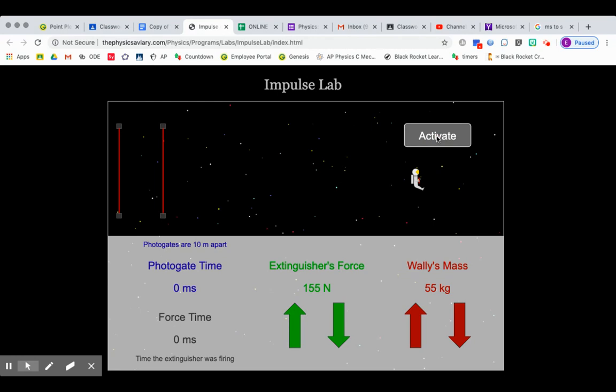Okay, so we have an astronaut and we have a jet propulsion pack that applies a force to increase the astronaut's velocity from zero to some value.